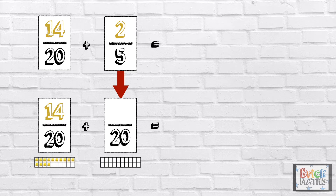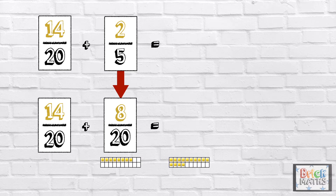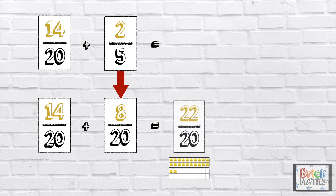So we need to find an equivalent fraction for 2 fifths with 20 as its denominator. We multiply 5 by 4 to get 20, so we need to multiply the numerator by 4 as well, which is 8. So 2 fifths is the same as 8 twentieths. Now that the denominators are the same, we can add the fractions: 14 twentieths add 8 twentieths equals 22 twentieths.